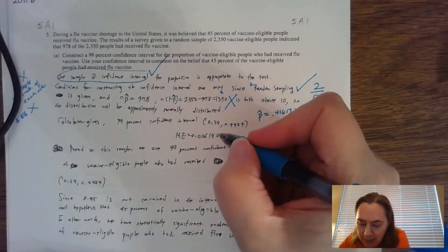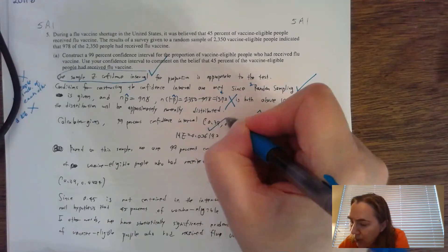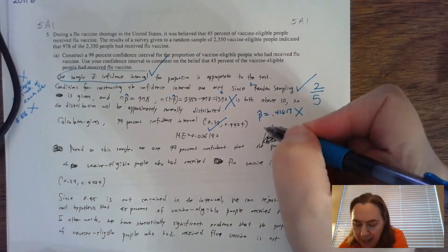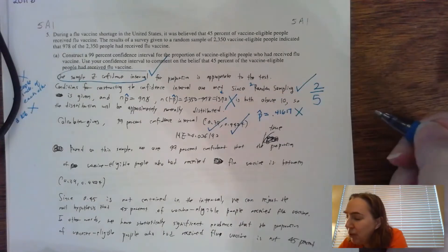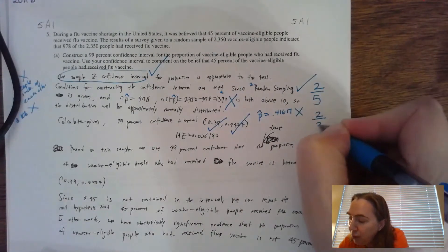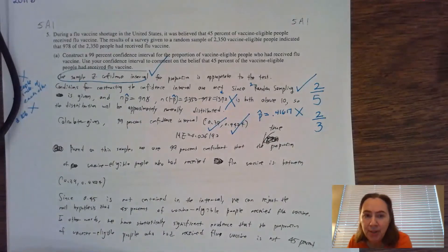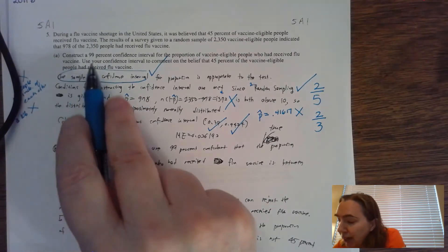What I'm looking for in the mechanics is two things: p-hat is equal to 0.41617—you can do a direct copy off the calculator—but then there also has to be the interval. The low end is about 0.38998. The high end is 0.442 something, and they have that one correct. For their mechanics, they have two out of the three checkmarks.